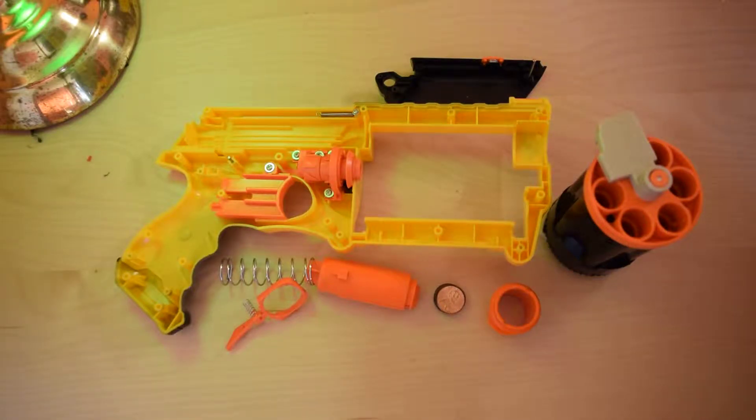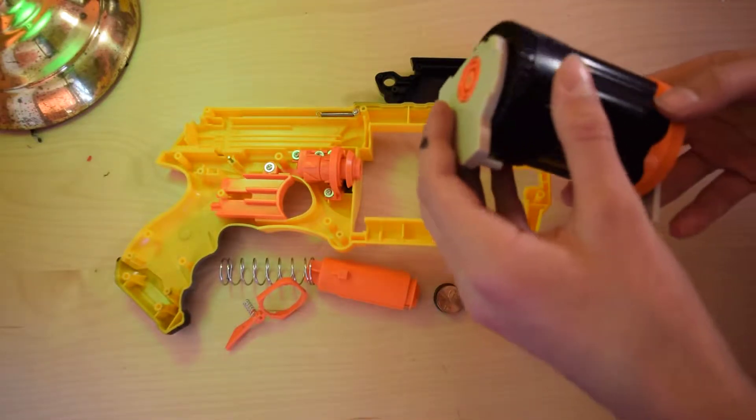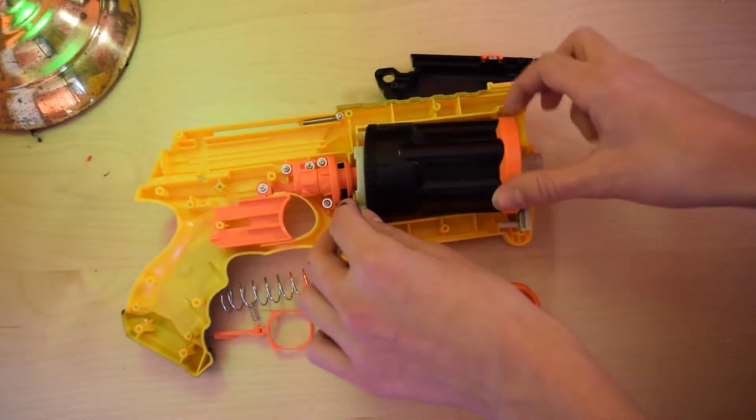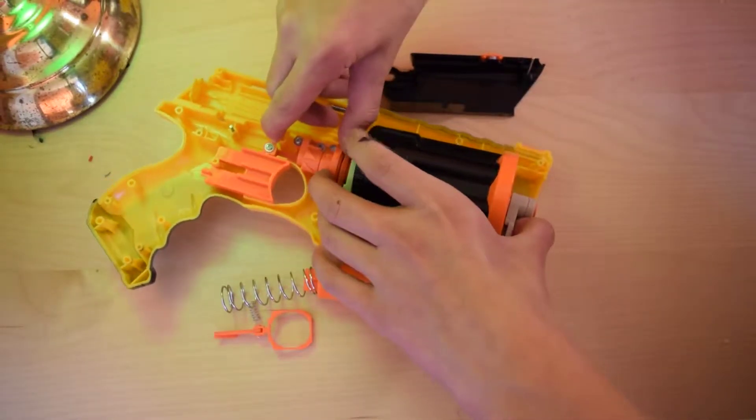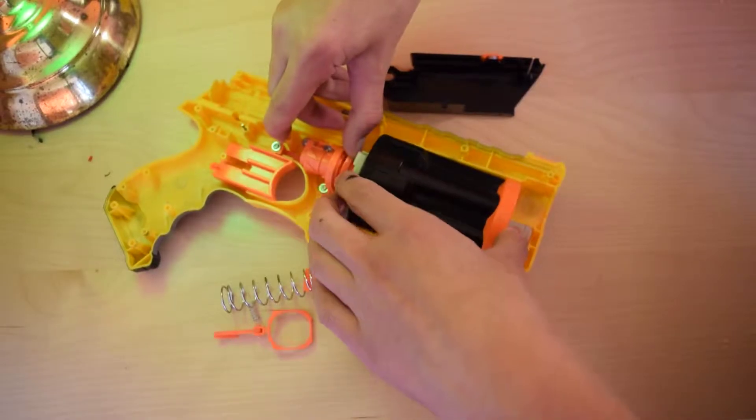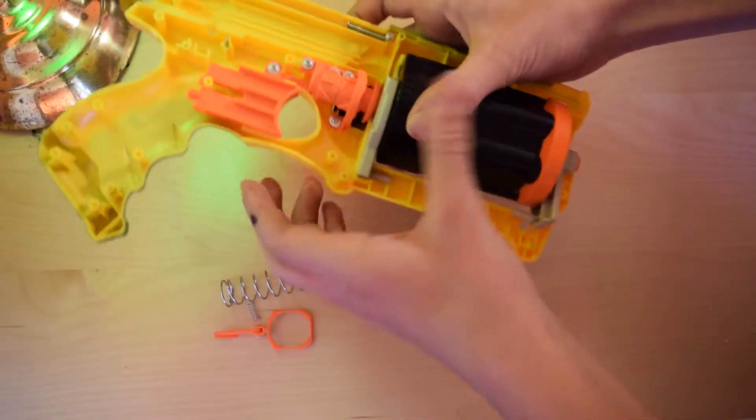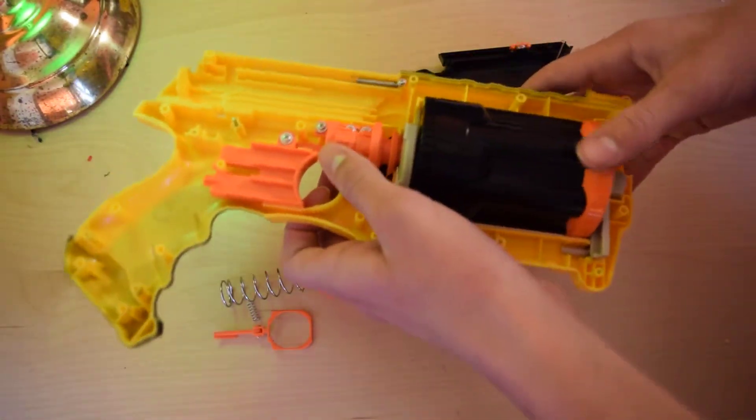So start by taking your cylinder and just putting it back in. You may need to press on this piece of plastic to get it back in, just like we did to get it out. Snaps into place and you're good.